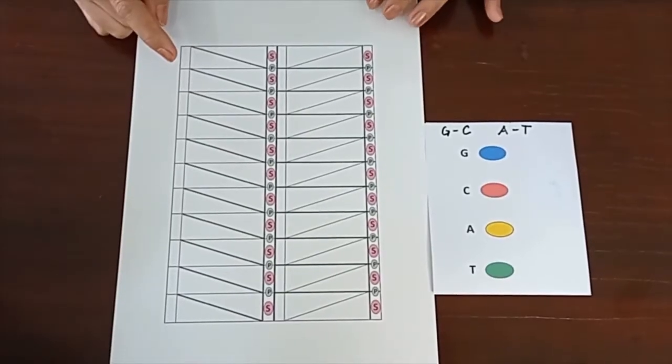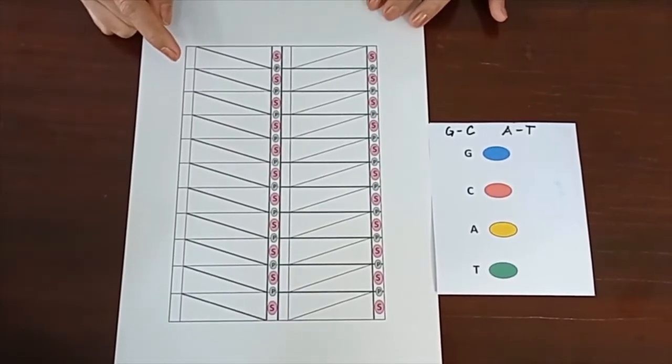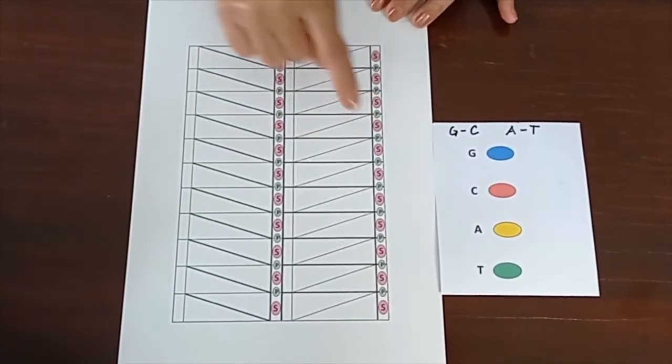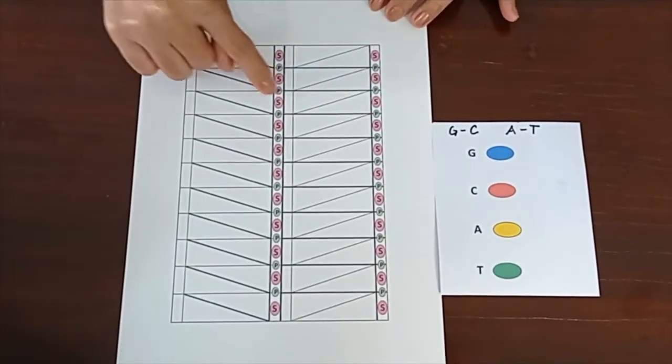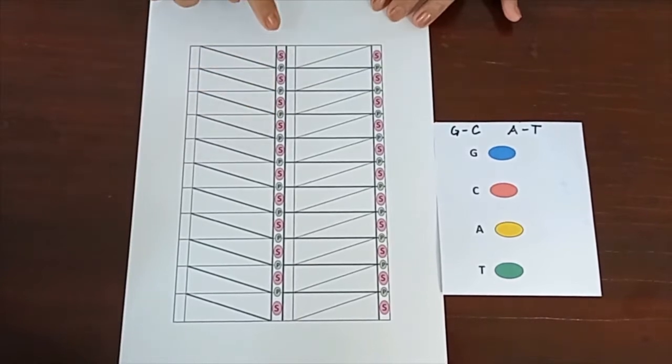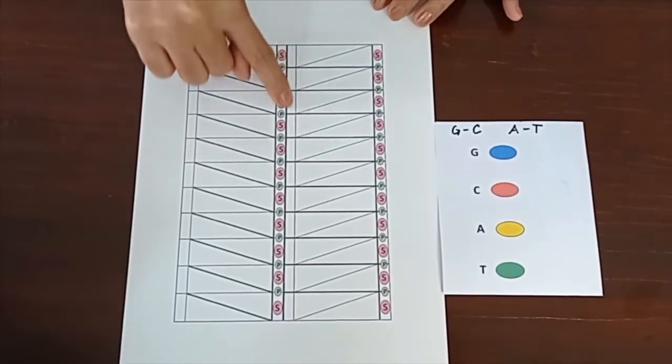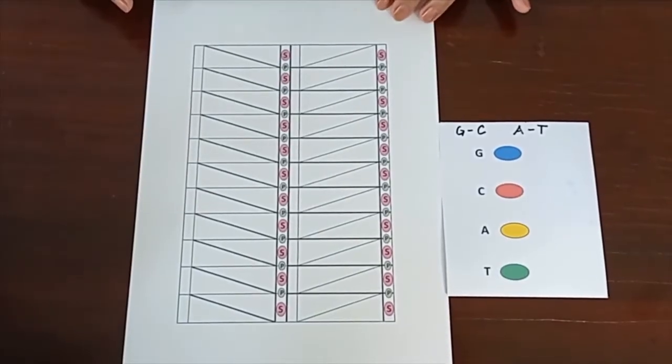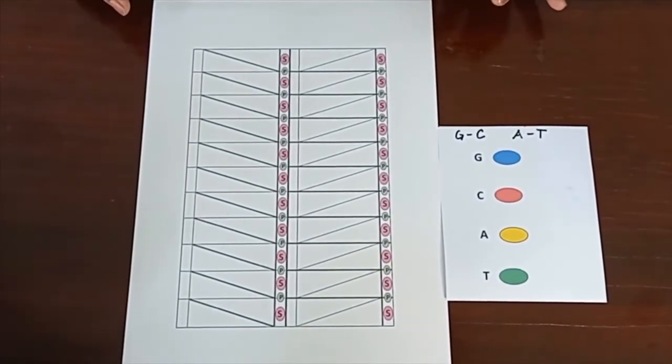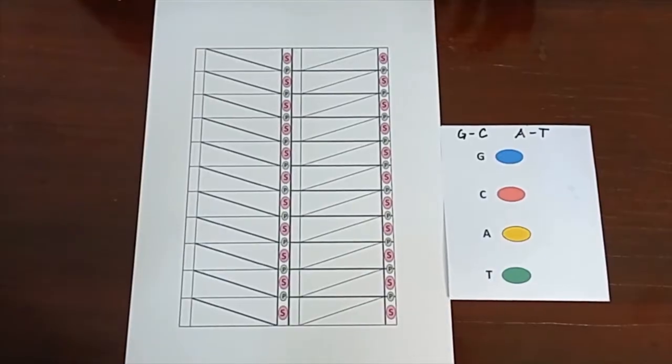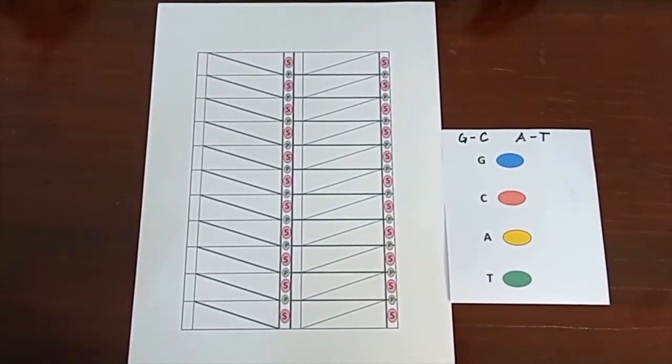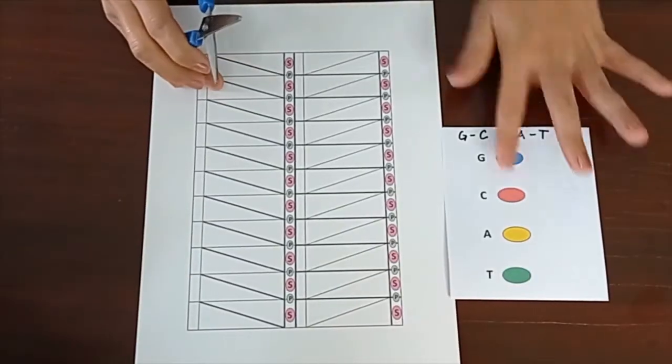Now, notice that this template has darker lines. Here, we have the horizontal lines, and here we have the diagonal lines. We also have a dark line here at the center. Take note that these lines are the lines that we are going to fold later. Before we start folding, we need to trim our paper by cutting it so only the template remains.